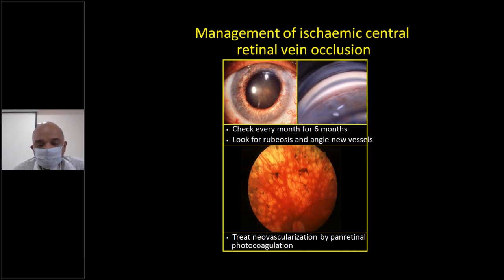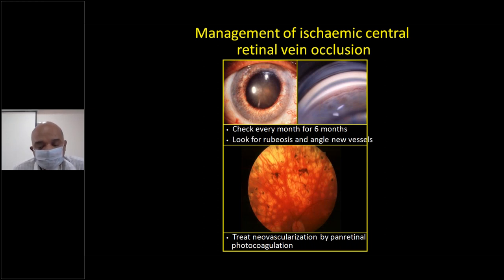To achieve this, you do pan-retinal photocoagulation. Photocoagulation means you coagulate the retina by giving laser energy — it simply burns the retina. Sparing the macular region, you burn the complete retina. Once burned, the complete retina becomes completely anoxic and does not promote formation of new vessels.